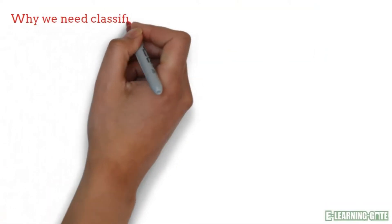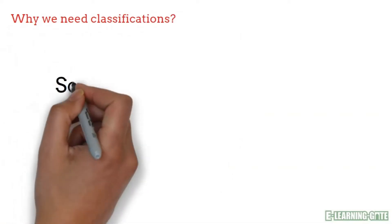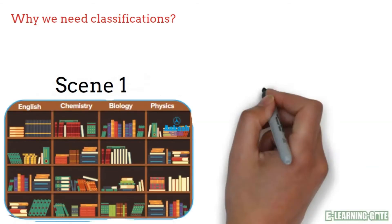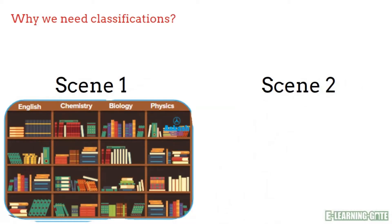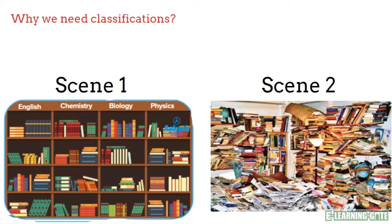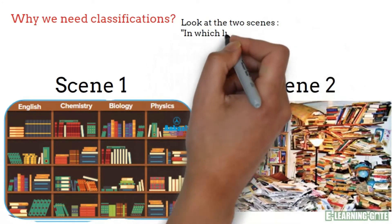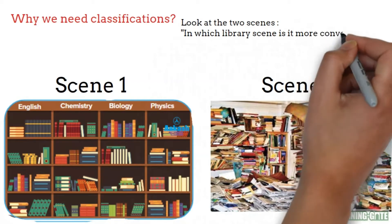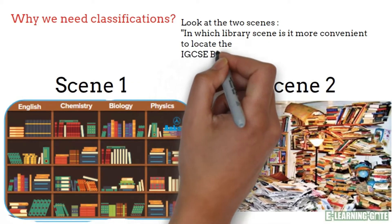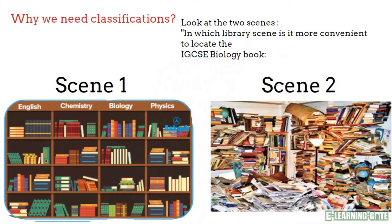Now let us explore this topic. Let's first understand the concept of classification — why we need it. Imagine walking into a library with books scattered randomly. Would you be able to find what you need easily? Probably not. Think of classification as the library's system of organizing books into genres, making it easier to locate and understand information. Finding the IGCSE biology book is effortless due to the systematic arrangement, allowing for quick and easy identification. If you understood the purpose of the two scenes, it means you also understood classification in biology.